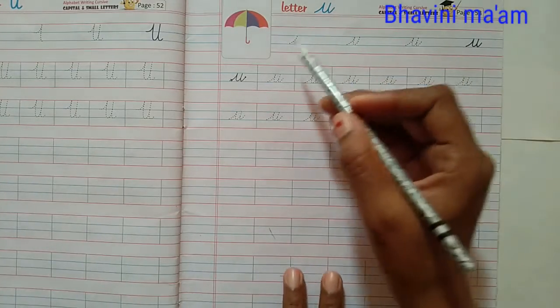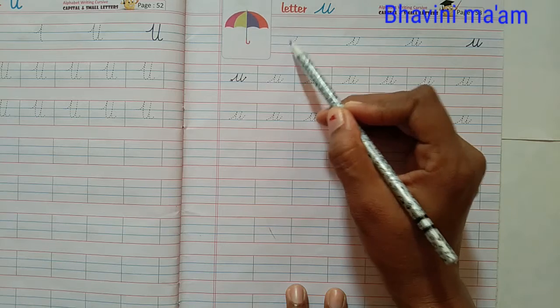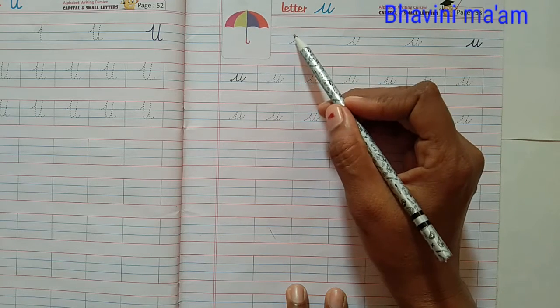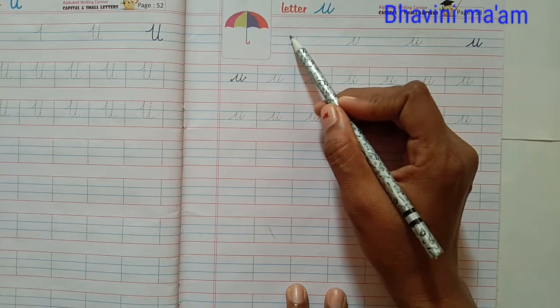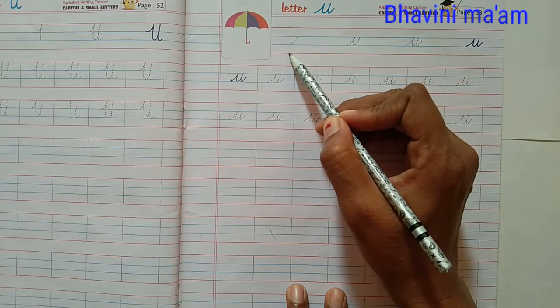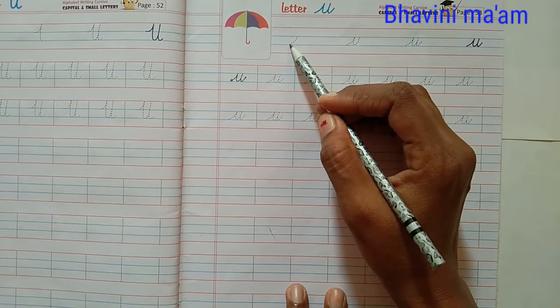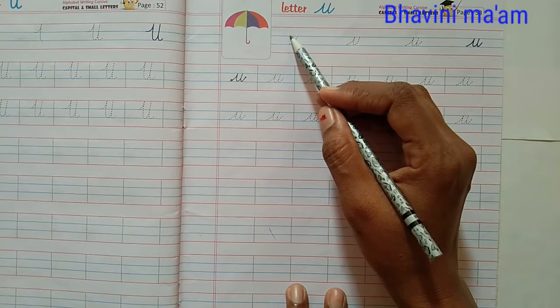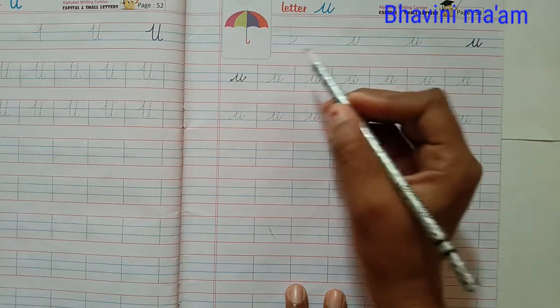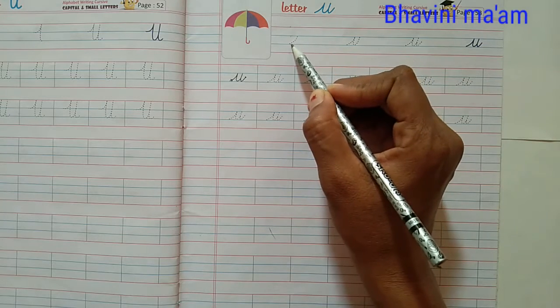Now ready? Start from here. Red blue line, red line, blue line, blue line and red line. Look at this. How many blue line here? Two blue line. First blue line and second blue line. Now start with me.